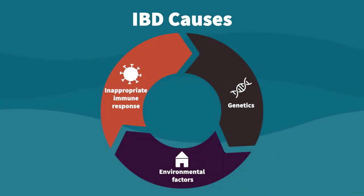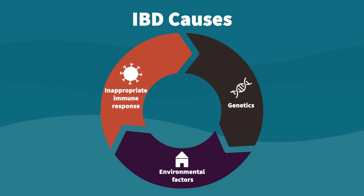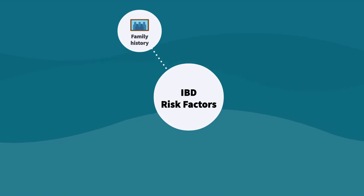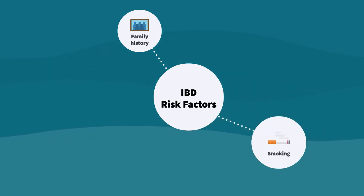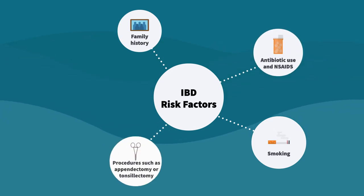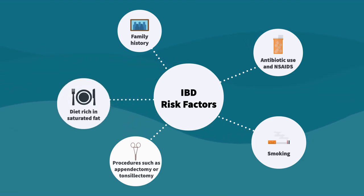The exact cause of IBD is unknown. It is thought to be an interplay of genetic susceptibility, environmental factors, and an inappropriate immune response. Risk factors for IBD include family history, smoking — which is protective in ulcerative colitis — medications such as antibiotics and NSAIDs, procedures such as appendectomy and/or tonsillectomy, which seem to increase the risk of Crohn's disease, and a diet rich in saturated fat.